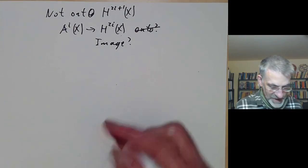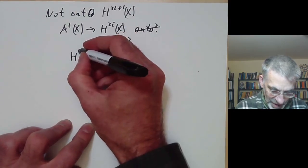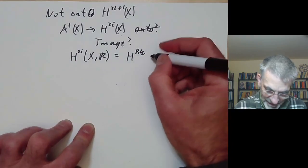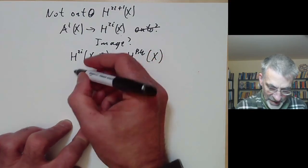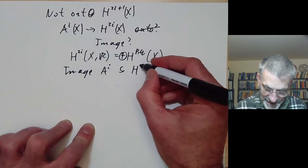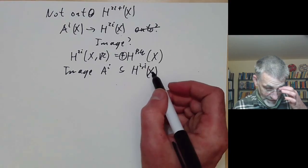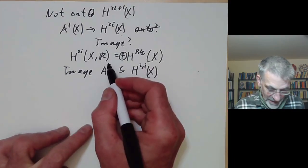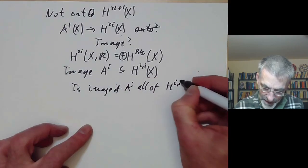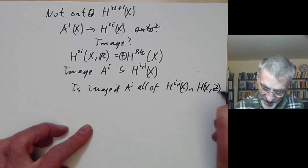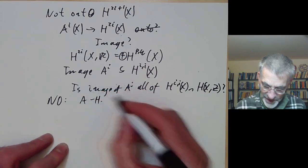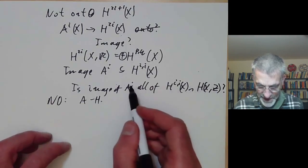Hodge found one obstruction. There's the Hodge structure on the cohomology of X with real coefficients, which writes it as a sum of groups H^{p,q} of X. What Hodge showed is that the image of any cycle is contained in H^{i,i} of X. These are also in the integral homology, so one can ask whether the image of A^i is all of H^{i,i} of X intersected with the homology of X with integer coefficients. The answer is no — a counterexample was found by Atiyah and Hirzebruch, who found a torsion element of cohomology not in the image of A^i.